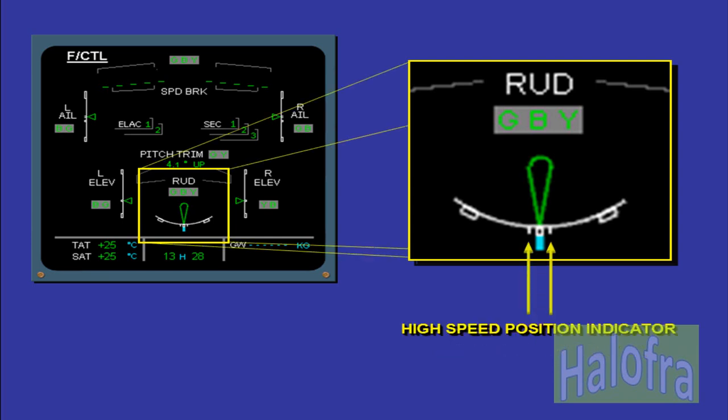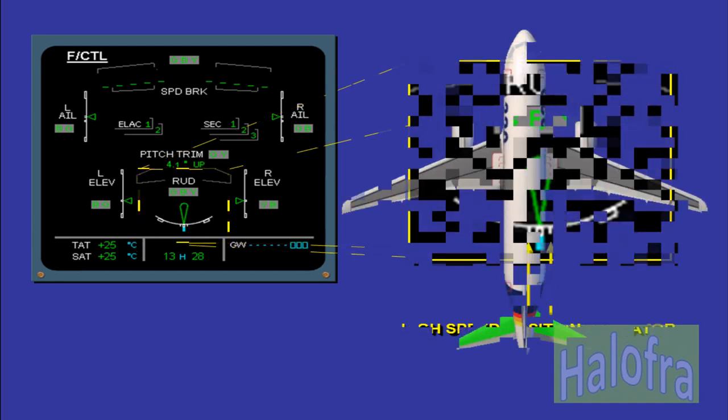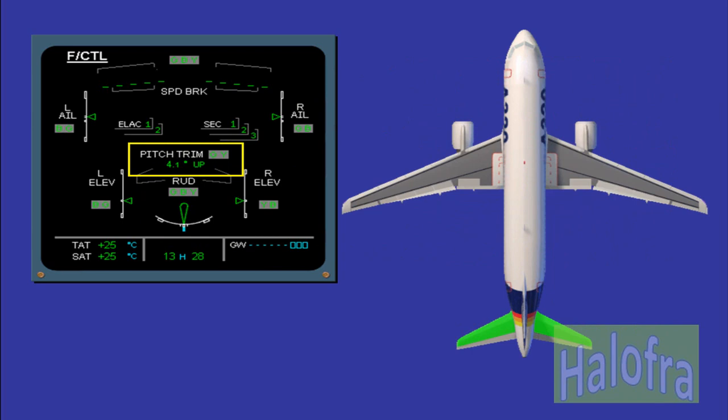The rudder and pedal deflections are limited via a rudder travel limiter at high speed. Rudder travel is limited as a function of airspeed. The FACs control electric motors coupled with a variable stop mechanism. The high speed position is indicated by small white ticks on the rudder scale. The pitch trim position is indicated by THS deflection in degrees up or down. The pitch trim hydraulic motor status is displayed on top of the THS position indication.